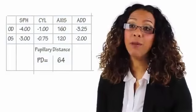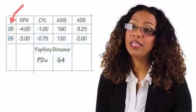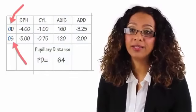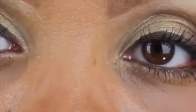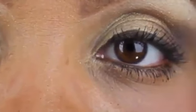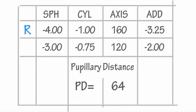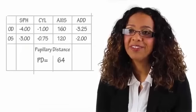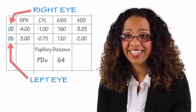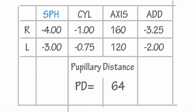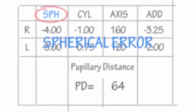The most common terms you will encounter are OD and OS. OD stands for right eye and OS stands for left eye. But sometimes prescriptions will just have an R and an L, which we all find easier to understand. So remember: OD means right eye and OS means left eye.